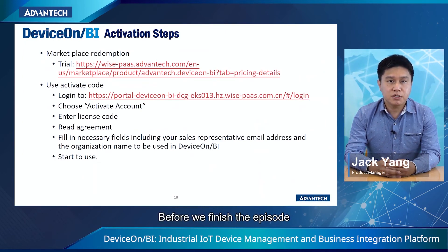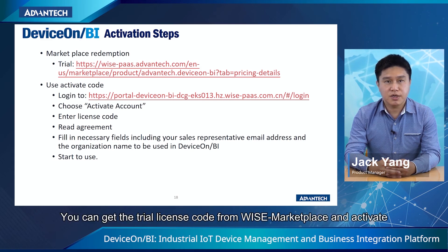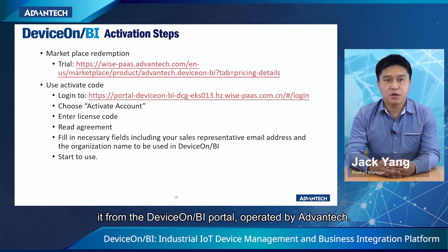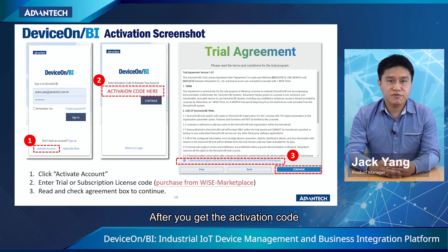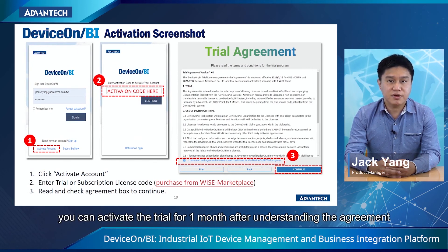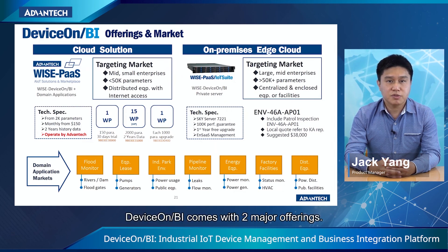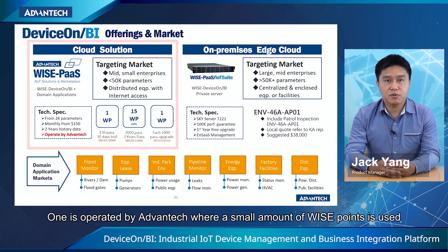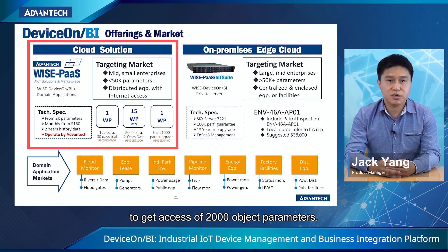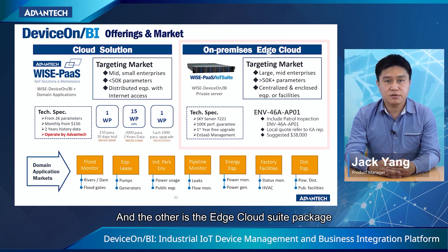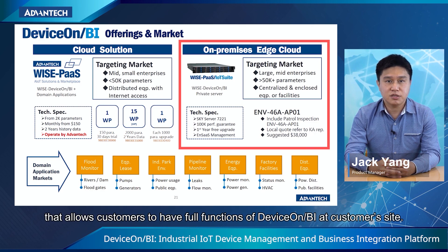Before we finish the episode, you are welcome to try DeviceOnBI. You can get the trial license code from WISE Marketplace and activate it from the DeviceOnBI portal operated by Advantech. After you get the activation code, you can activate the trial for one month after understanding the agreement and filling in the respective fields. DeviceOnBI comes with two major offerings: one is operated by Advantech, where a small amount of WISE points is used to get access to 2,000 object parameters; and the other is the cloud edge cloud suite package that allows customers to have the full function of DeviceOnBI at the customer's site.